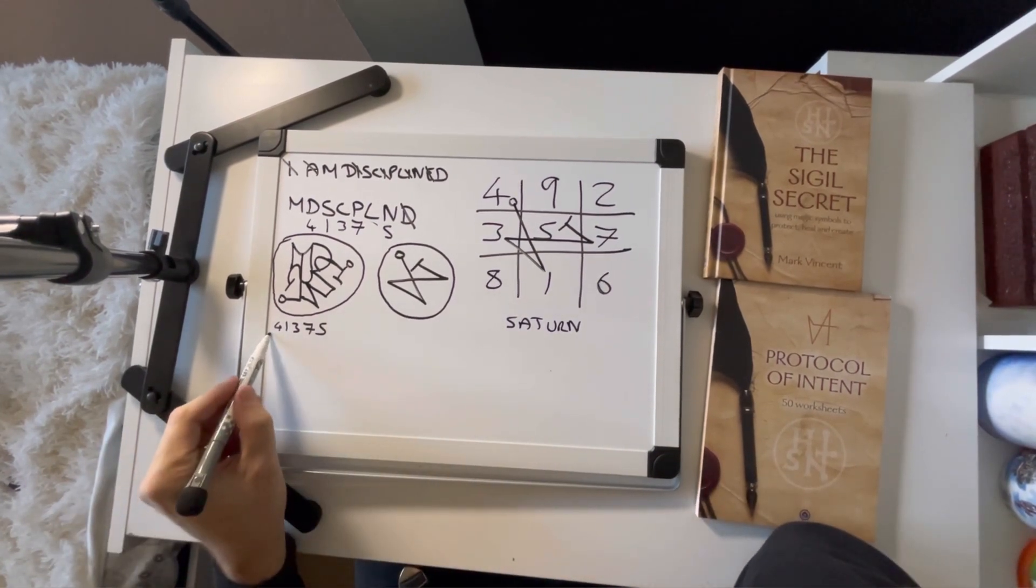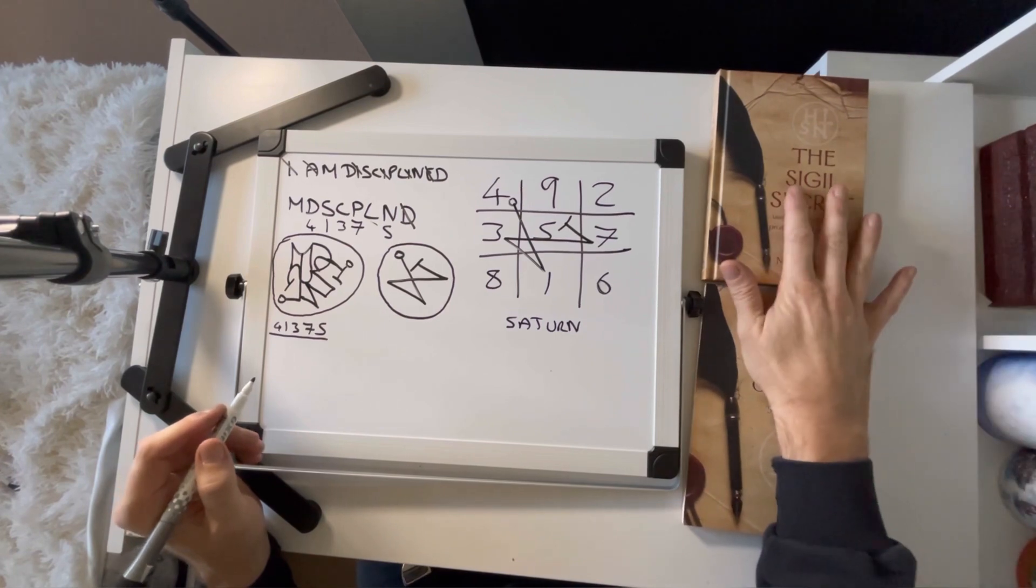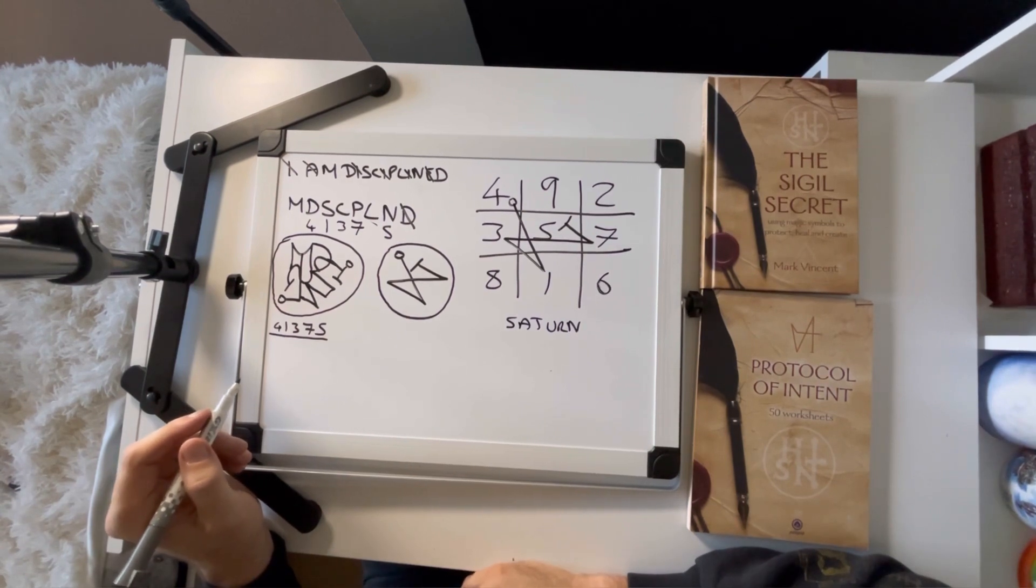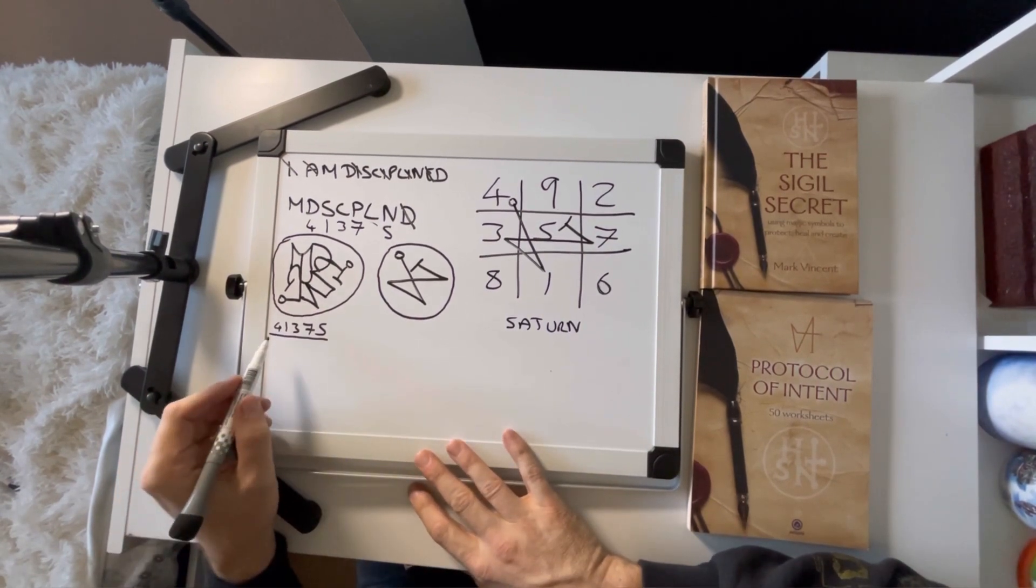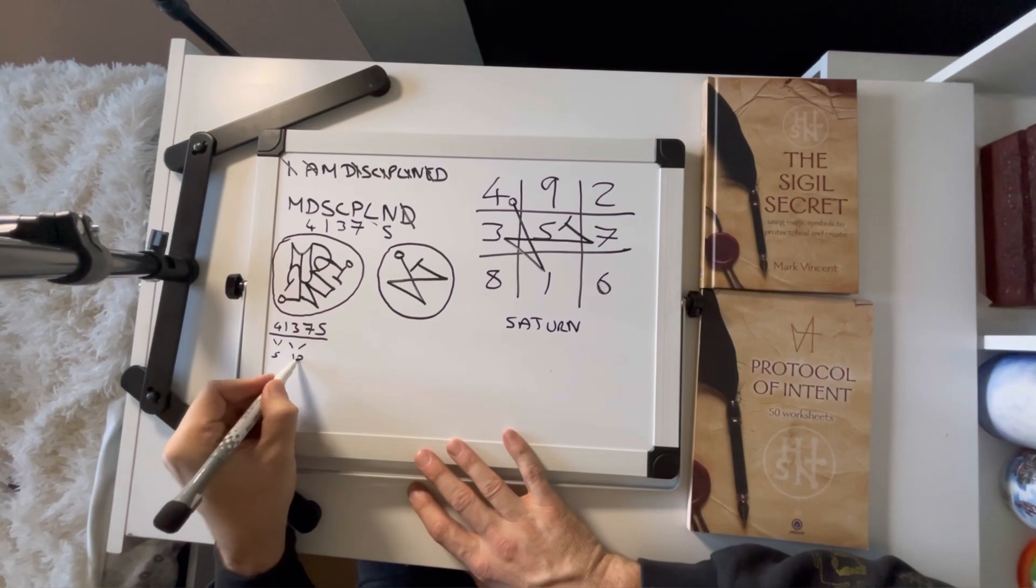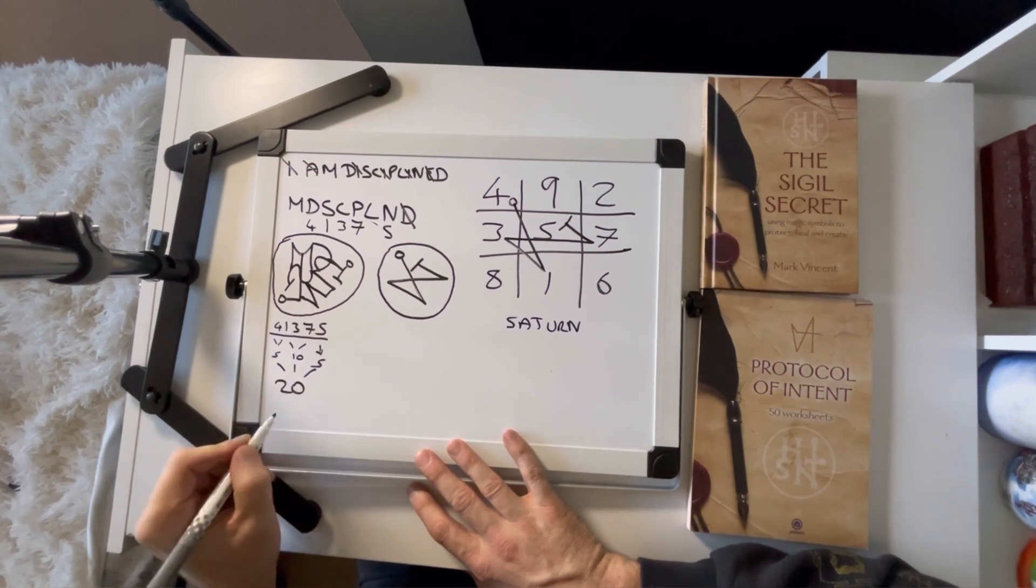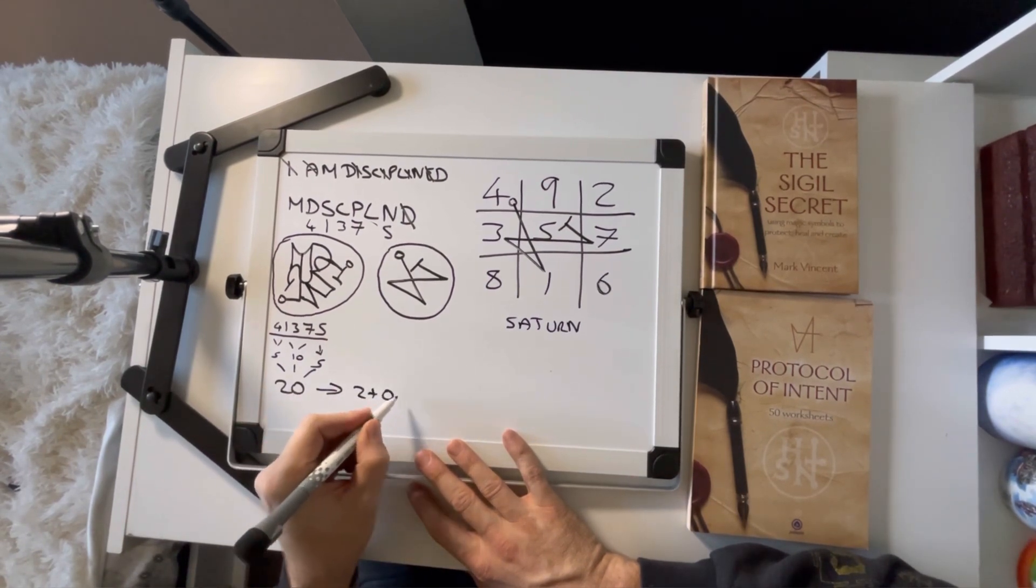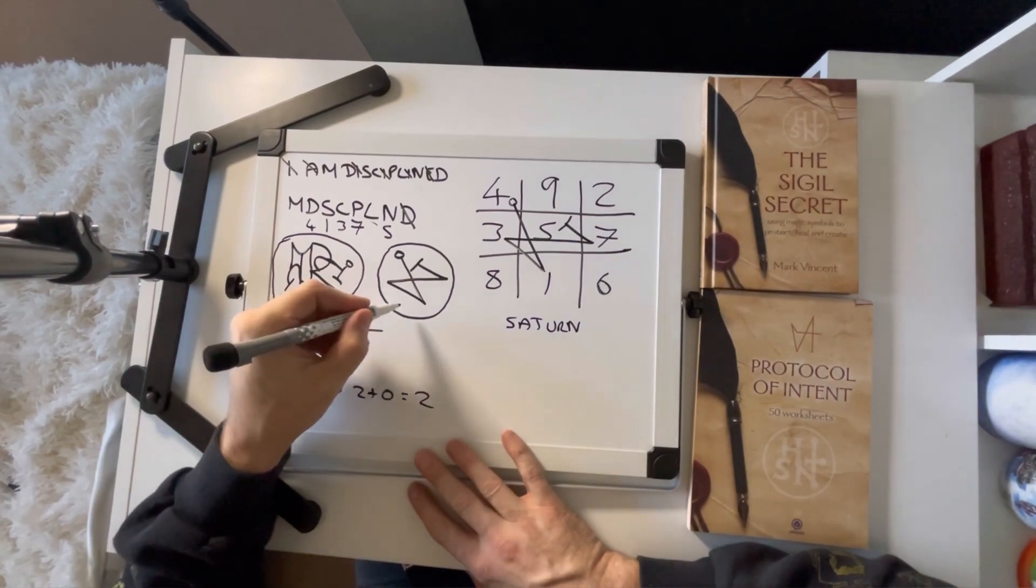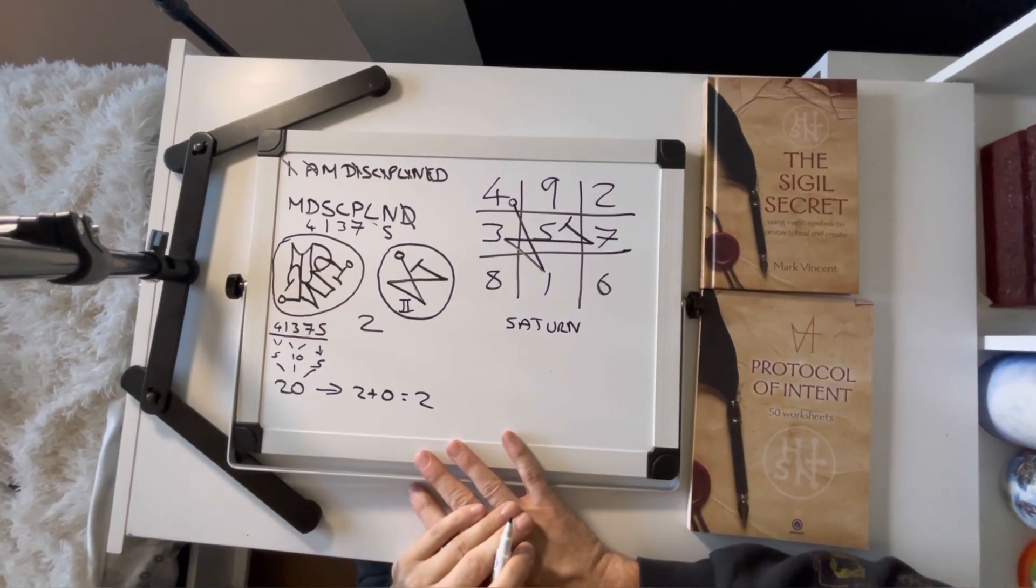So one last thing with this string of digits. There's an extra thing you can do is to give your sigil a magic number. Which I talk about in the book a little bit. It can be used in charging rituals and can dictate sort of how many times you do incantations. Things like that. So to get a magic number you add these numbers together. So 4 plus 1 is 5. 7 and 3 is 10. 5 plus 7 is 5. So you add them together. And you get 20. 2 plus 0 equals 2. So the magic number is 2. So for example you may want to put a Roman numeral 2 inside your sigil as a reminder. That's entirely up to you.